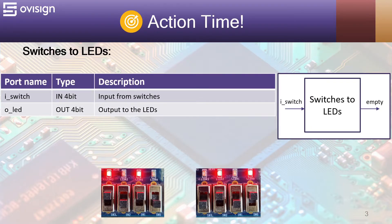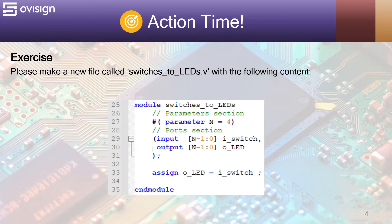Let's analyze our module ports. We have the ISwitch port which is an input of 4 bits. And the OLED output which is an output of 4 bits. This is as easy as it can be. Please make a new file called switchesToLEDs.v with the following content. Now I will briefly explain the Verilog code.